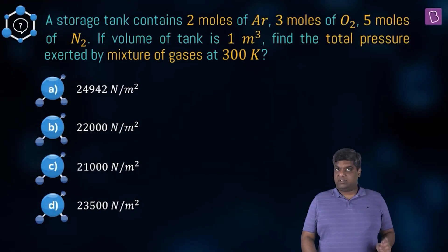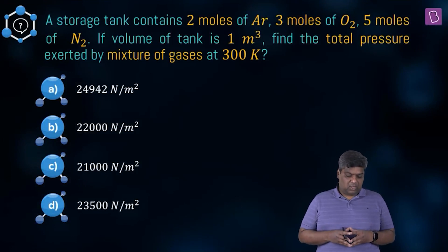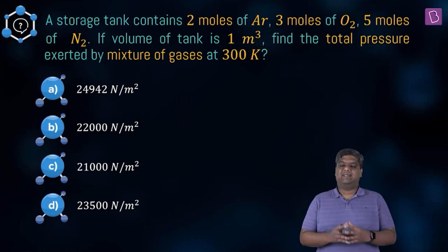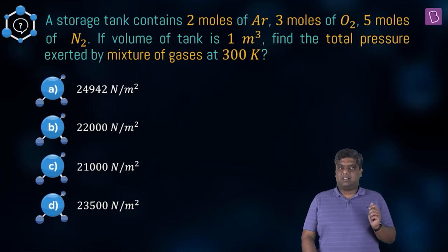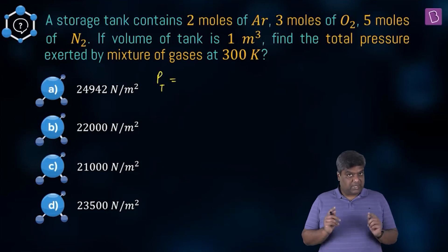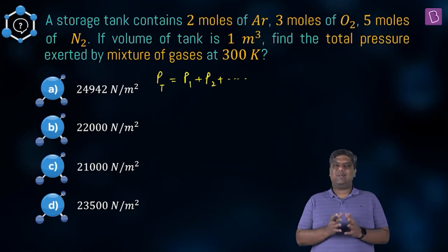A storage tank contains two moles of argon, three moles of oxygen, and five moles of nitrogen. If the volume of the tank is one meter cube, find the total pressure exerted by the mixture of gases at 300 kelvin. We are going to use Dalton's law of partial pressures, which states that the total pressure exerted by a mixture of gases is equal to the sum of the pressures exerted by the individual gases.